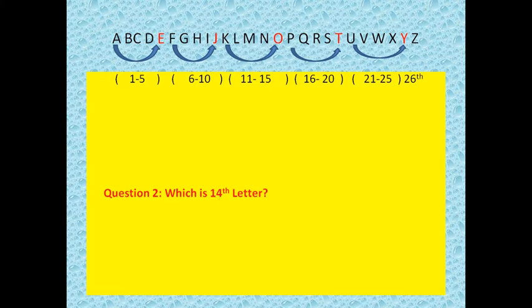Let's, next question, same type of question, which is 14th letter. So, you are again aware that O is the 15th letter. So, then 14th letter will be N, because N comes before O. This is the first method.